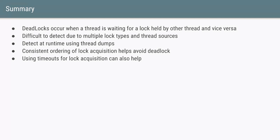In summary: deadlocks occur when two threads are each waiting for a lock held by the other. They are difficult to detect at compile time because Java has multiple hidden lock types and multiple sources of threads. You can detect deadlocks using thread dumps or the ThreadMXBean API's findDeadlockedThreads(). You can avoid deadlocks by using consistent lock ordering and by including timeouts during lock acquisition so locks can be released and retried if a deadlock situation arises.